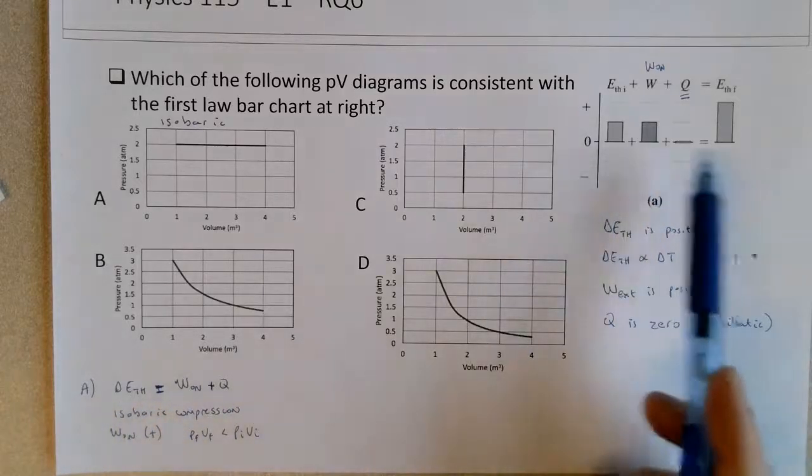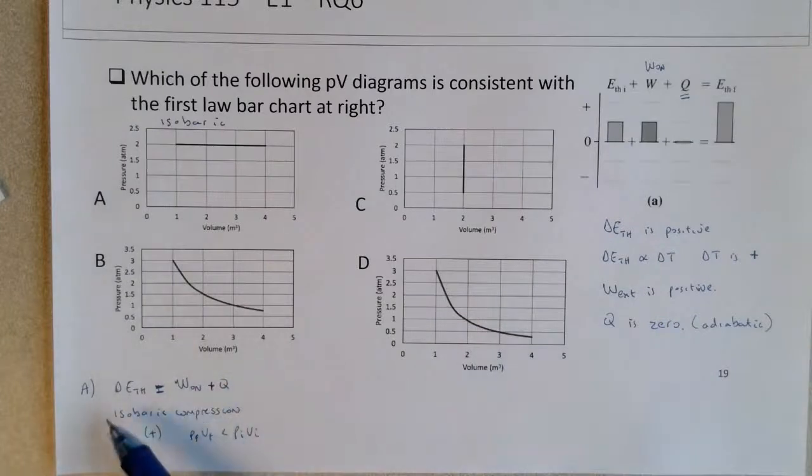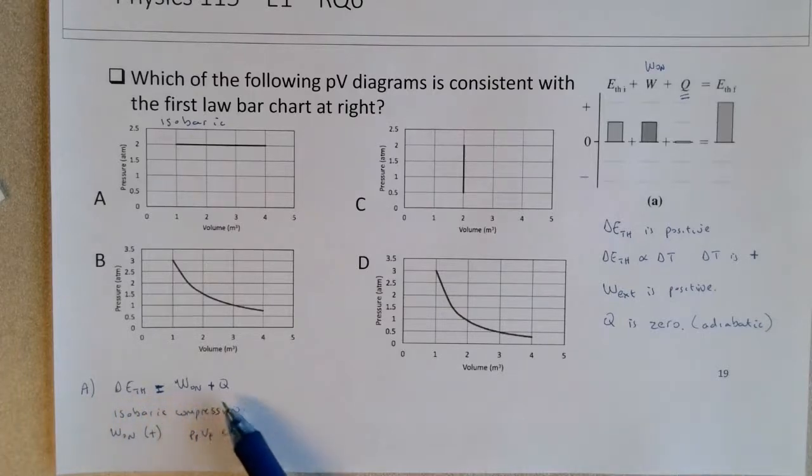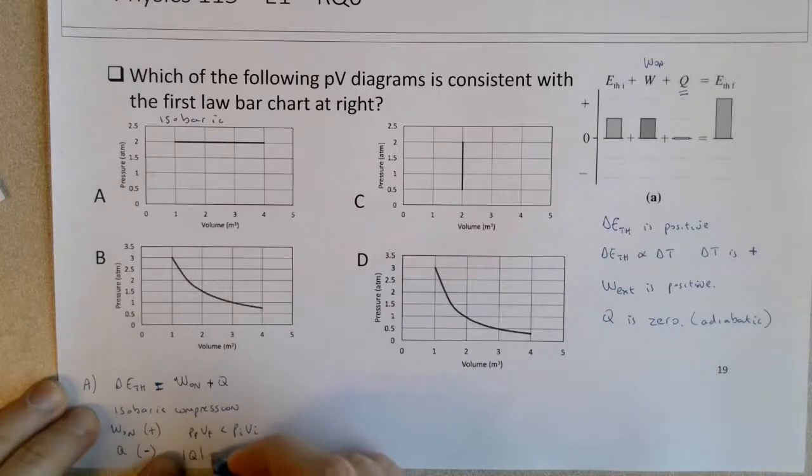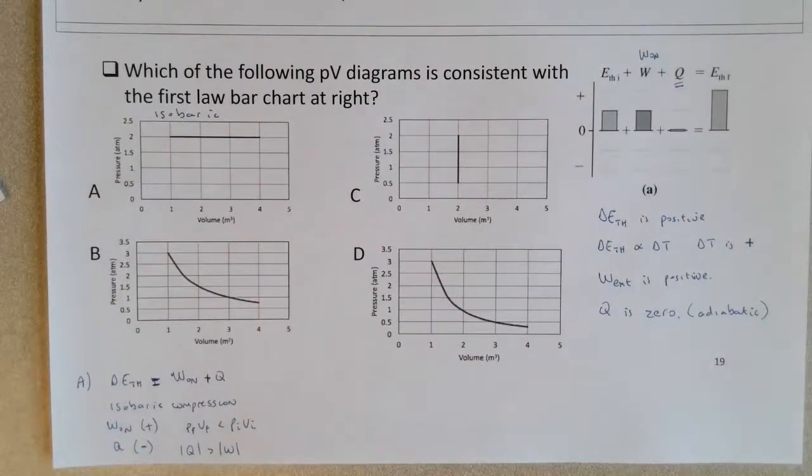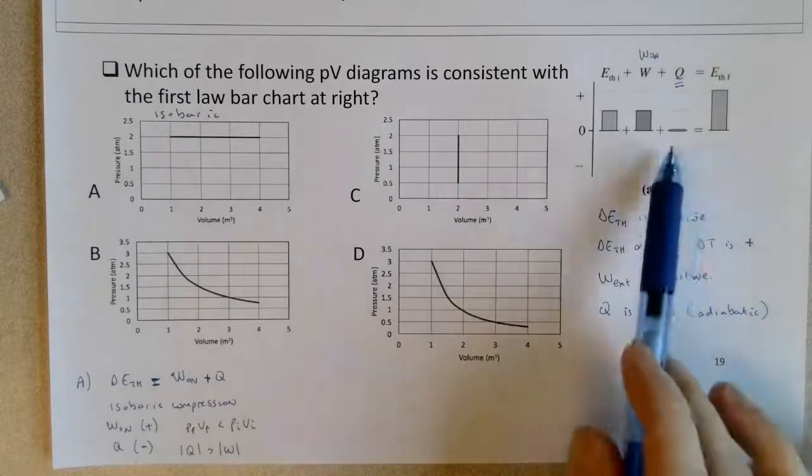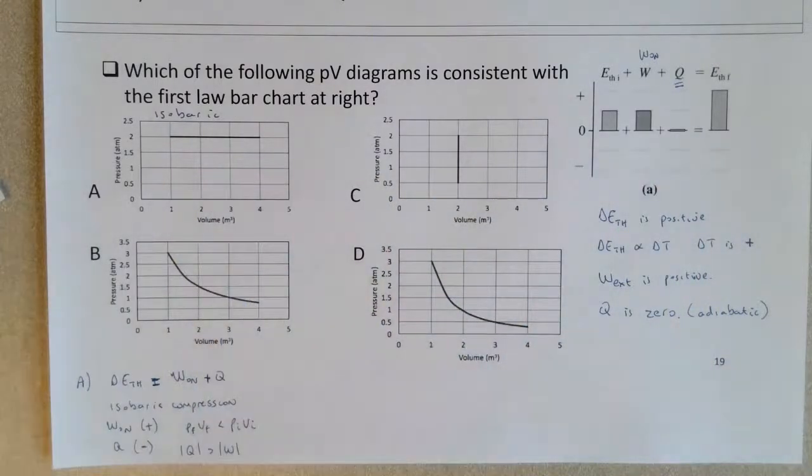That would definitely rule out that this graph is not consistent, but there's a couple of extra reasons. So the delta E_TH is negative for positive work. So you can ask yourself the question, what sign must Q have? If work on is positive and delta E_TH is negative, what value must Q have? Q must be negative. And not only negative, but the magnitude of Q must be larger than the magnitude of work, in order so that there must be more thermal energy leaving the gas than the positive work put into the system in order for the gas to cool.